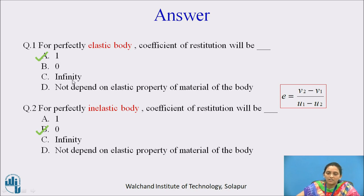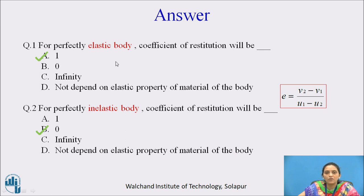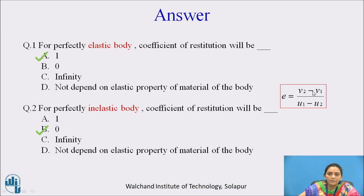Here are the answers. You must know the properties of elastic and inelastic materials. When the body is perfectly elastic, before and after impact it moves with the same velocity — there is no loss in velocity. So the ratio is 1. When the body is perfectly inelastic, after impact both bodies do not move. So the velocity after impact is 0, and the coefficient of restitution is 0.